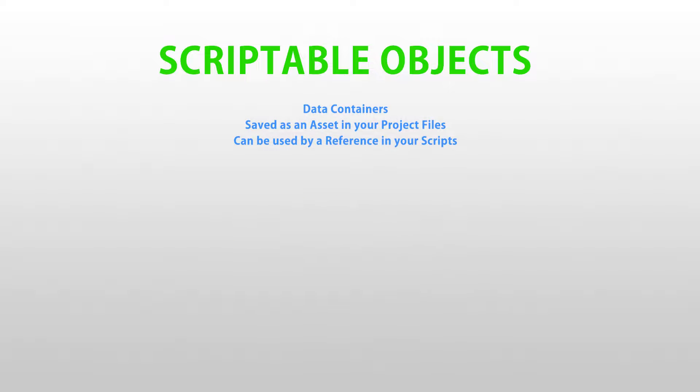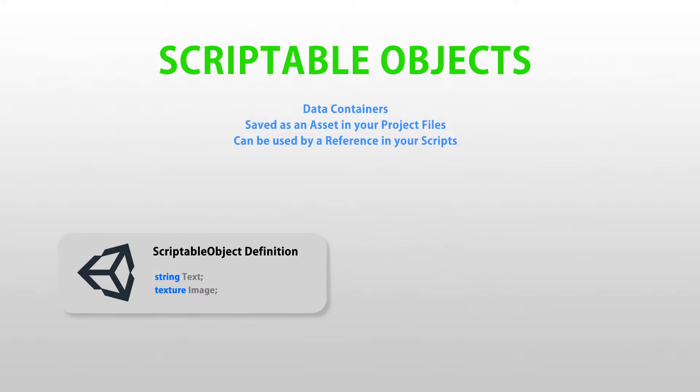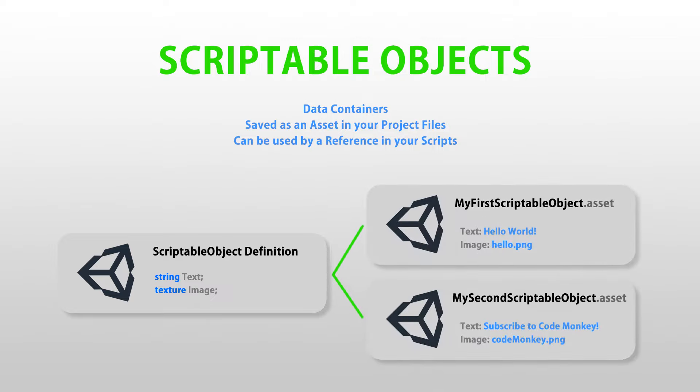Scriptable objects are an excellent feature that makes your game much more designer friendly. Essentially, they are simply containers of data. You define the various fields you want your object to have, then you create instances of that object in your project files and set those fields to whatever you want. The key point is you define and store all that data in discrete objects in your project files, rather than having all of that written directly in the code. If you want to make your game more designer friendly, then scriptable objects are the way to go.